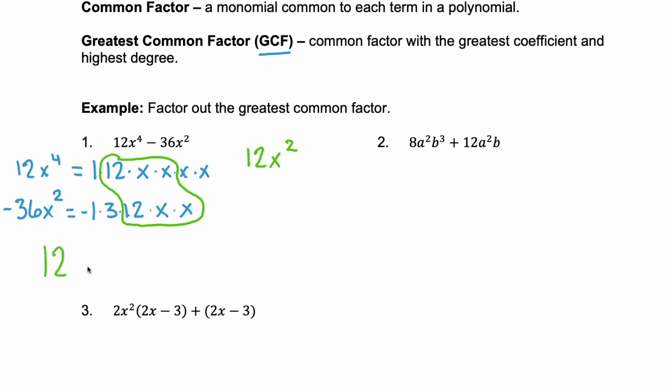I factor out that 12x squared, and then we look at what gets left behind for each term. Well, the first term, we have the 1 and x times x left behind. Well, that's the same as x squared. And in the second, we have negative 1 times 3, or negative 3. So here we factored out the GCF of 12x squared, and we're left with a binomial of x squared minus 3.